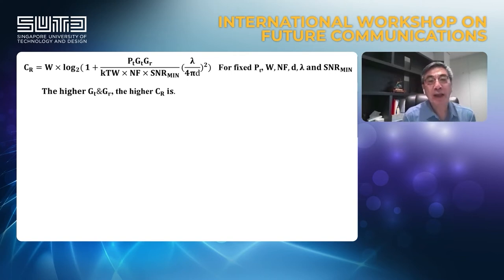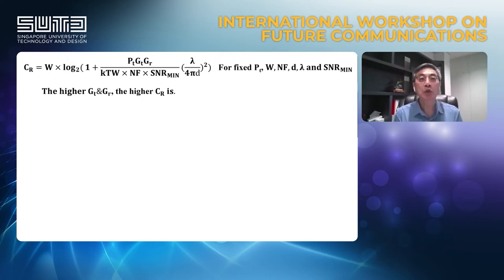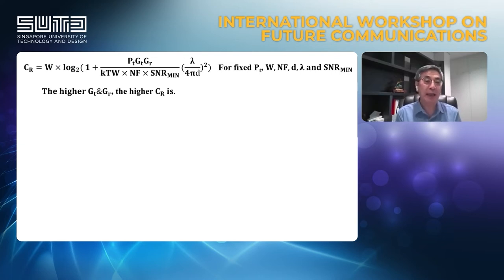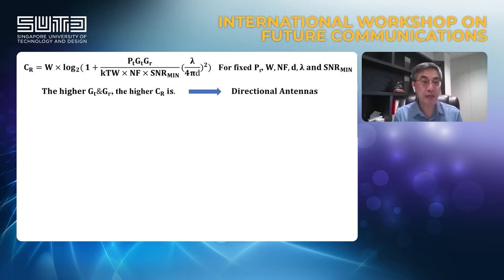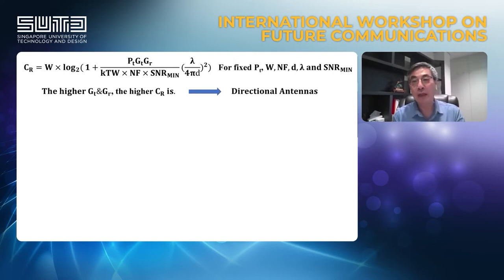From the modified equation, we can see that increasing the transmit power level increases channel capacity, but there are regulatory limits. We also have transmitting and receiving antenna gains G_T and G_R. When we keep the transmitter power P_T constant and increase the gains of both antennas, the channel capacity increases. This means higher antenna gain — achieved by changing from an omnidirectional to a directional antenna — provides higher channel capacity.